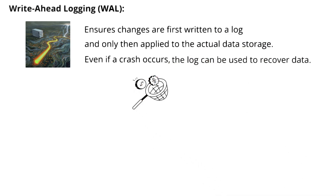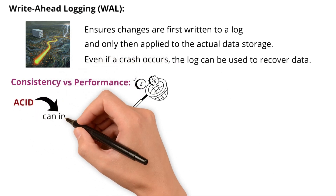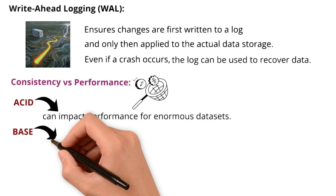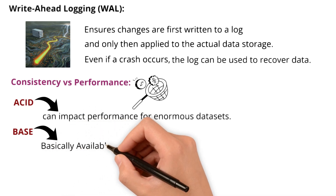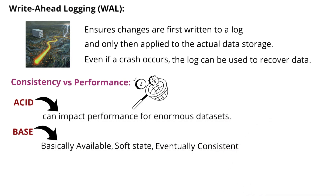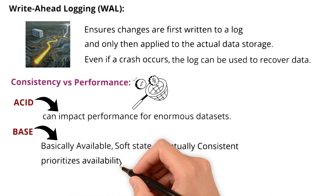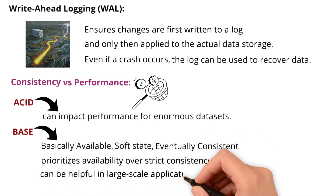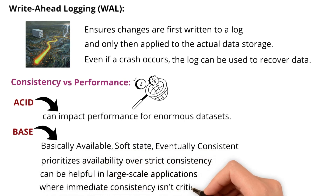There is a catch — balancing consistency versus performance. While ACID is ideal, it can impact performance for enormous data sets. In such cases, some systems use BASE — basically available, soft state, eventually consistent — as an alternative. BASE prioritizes availability over strict consistency, which can be helpful in large-scale applications where immediate consistency is not critical.